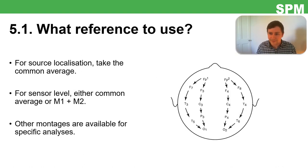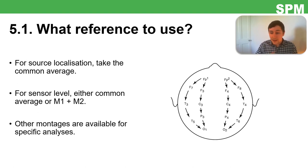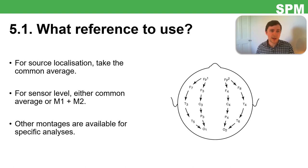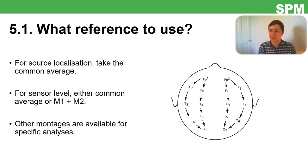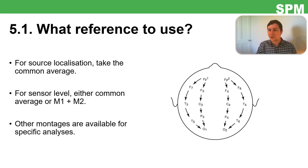In SPM you can simply select all channels for a common average reference, or for sensor-level analysis use M1+M2 or the common average. In clinical settings there are also interesting montages like the 'double banana,' which references sequentially from Fp2 to F4, F4 to C4, C4 to P4, and so on, allowing you to look for phase reversals as a signal moves along the scalp. Not really used in a research setting, but it's interesting.